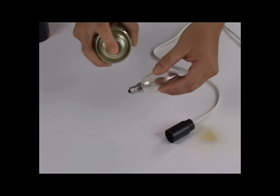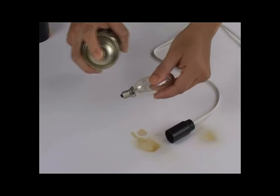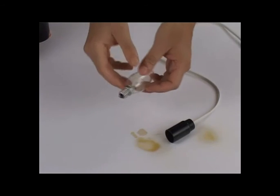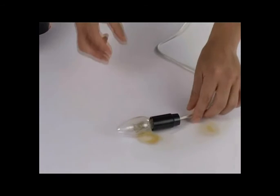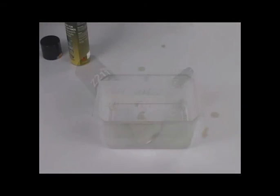Spray Corium Z211 on the lamp socket, wire connections and terminals to ensure complete coverage. Spray Corium Z211 on the metallic connection of the bulb and ensure complete coverage.